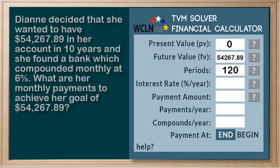The interest rate we're told is 6%. The payment amount — that's what we're looking for, so let's skip that. We have 12 payments per year, and we also have 12 compounds per year.